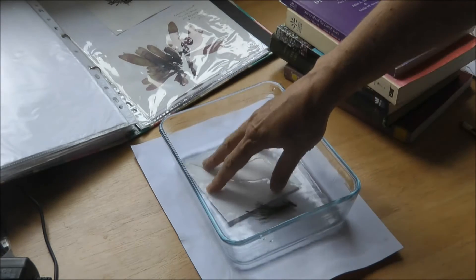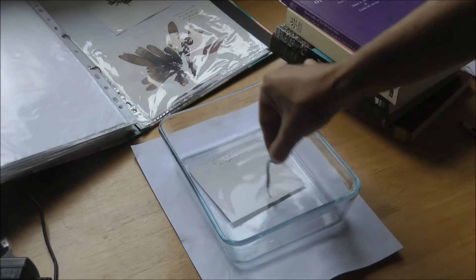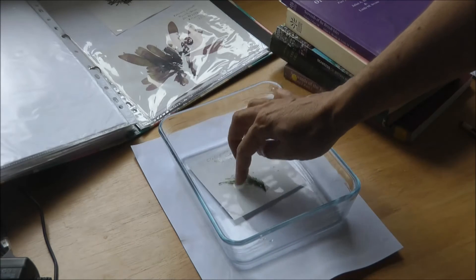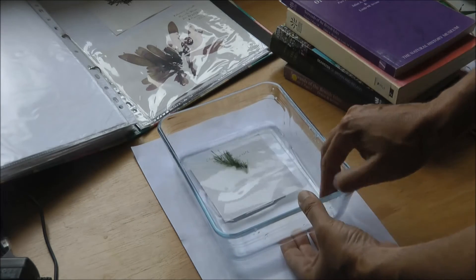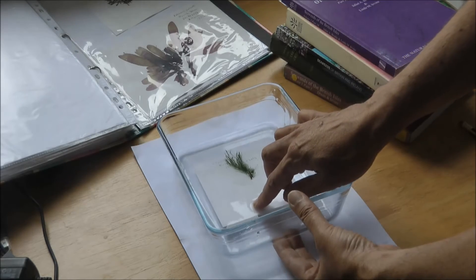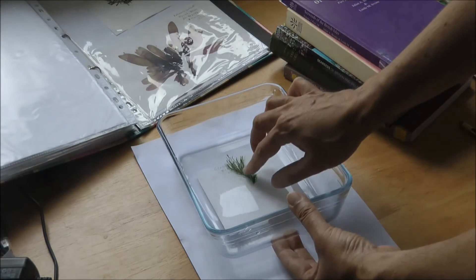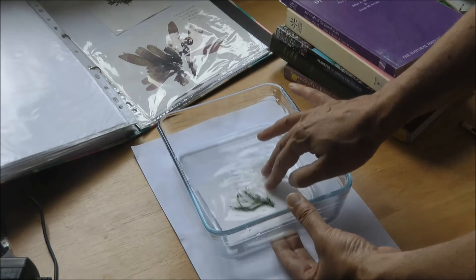That'll do. Then you can lay your seaweed on the paper. You then just need to tilt it so that there's no water at this end. We've got quite a shallow tray here, and now you can just move it up a bit.